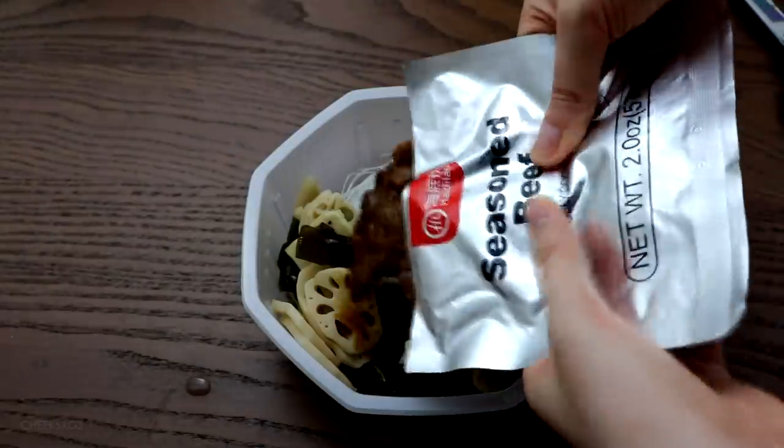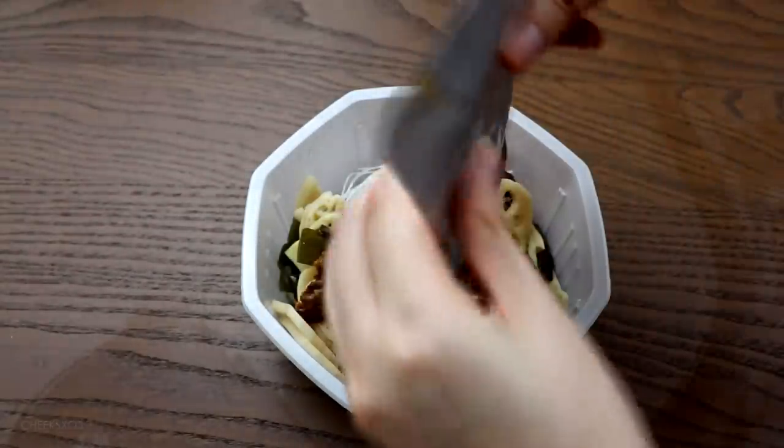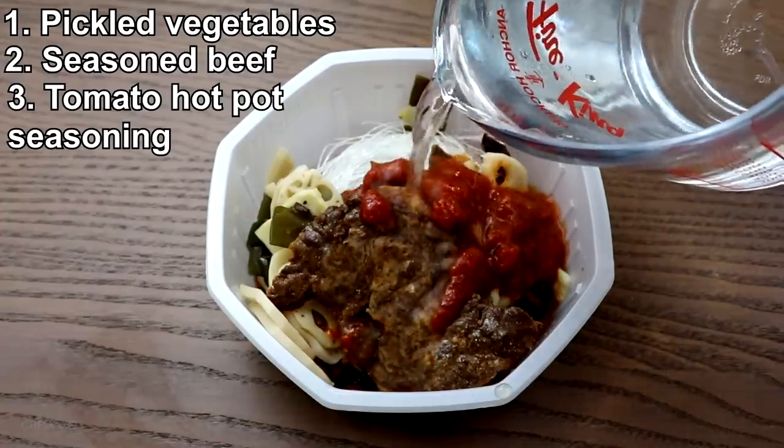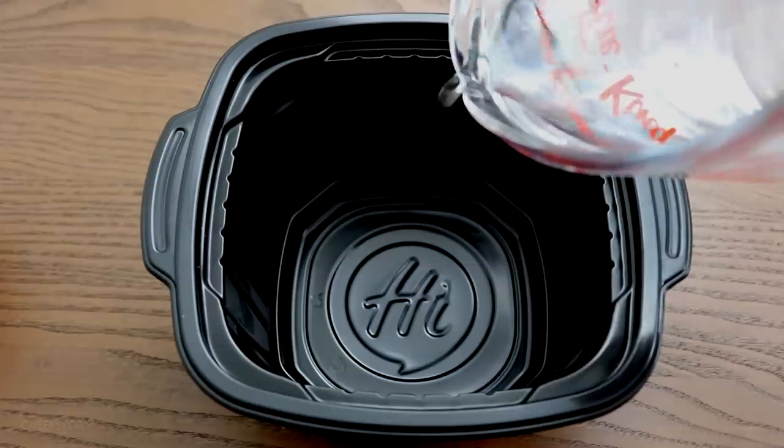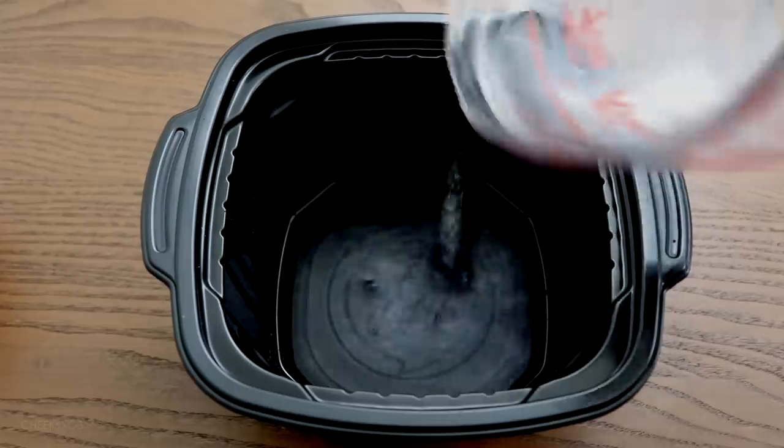So for step one, they want you to add all of the things in a certain order. So first you add the pickled vegetables, seasoned beef, and then the tomato flavor hot pot seasoning. And then you just add water to the maximum line. They also warn you to not use hot water—make sure that it's cold.